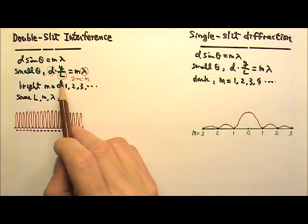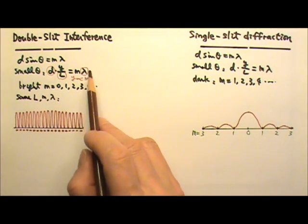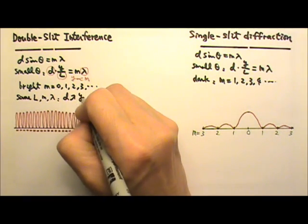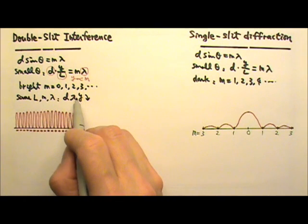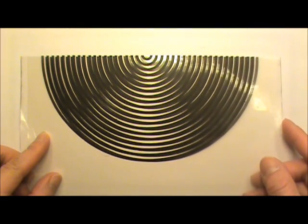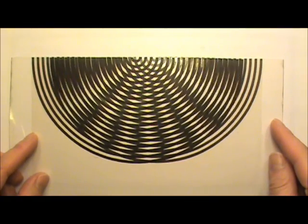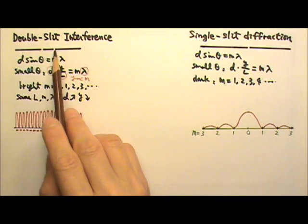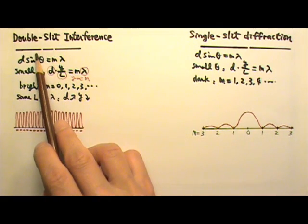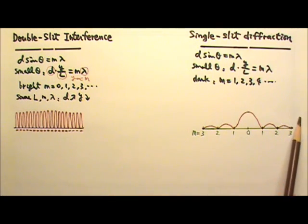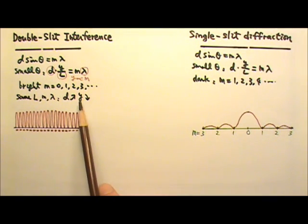This is because for the same l — the same distance to the screen — the same m order number, and the same wavelength, d times y would have to be a constant. This means the bigger the d, the smaller the y, which means the bigger the d, the closer the fringes on the screen, because y is the distance on the screen. If all of these slits have the same width, then the slit separation d for the double slit is bigger than the slit width d for the single slit. This is why the pattern on the screen is wider for the single slit, because the d is smaller — the smaller the d, the bigger the y.